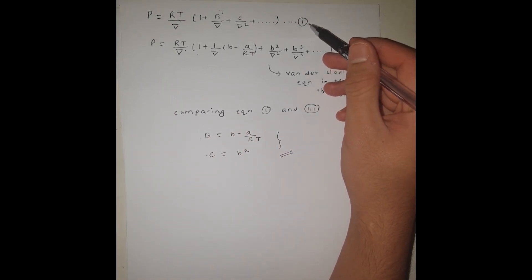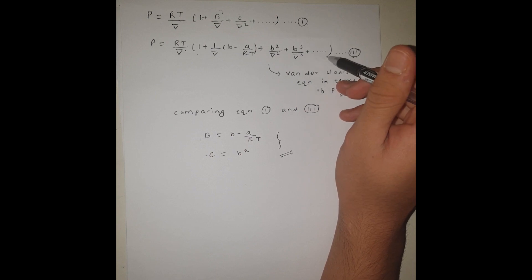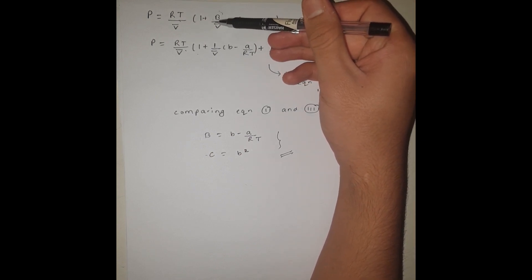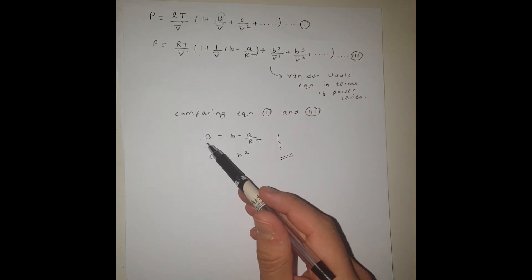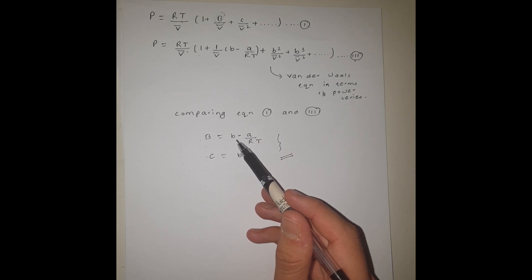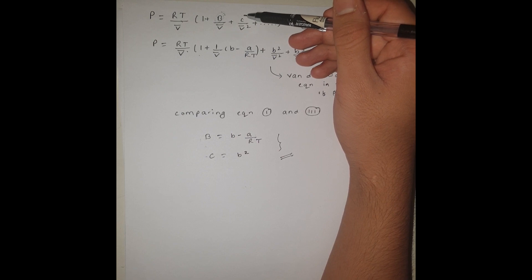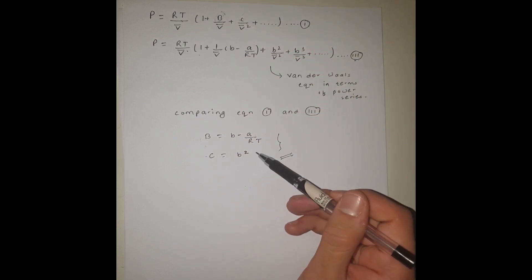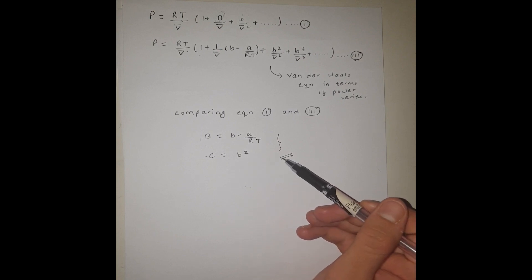Now comparing the first equation — the virial equation of state — with the third equation, which is the modified Van der Waals equation, we find that B, the second virial coefficient, is equal to b minus a/RT, where b and a are the Van der Waals constants. And C, the third virial coefficient, is equal to b², where b is the Van der Waals constant. This is the required result.